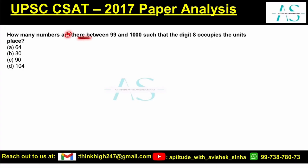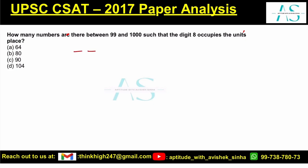How many numbers are there between 99 and 1000 such that the digit 8 occupies the units place? We are looking for three-digit numbers, because a two-digit number is not possible and a four-digit number is not possible. So we are looking at all three-digit numbers, with digits available from zero to nine.